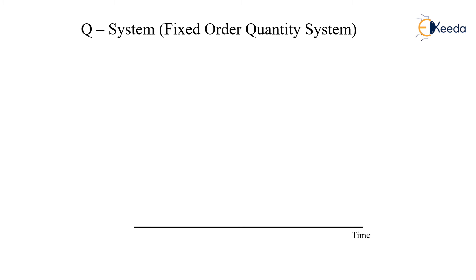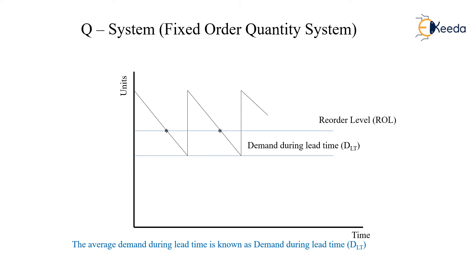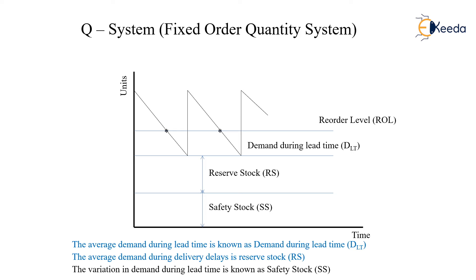What is the Q system? In this, we have the fixed order quantity system. If we plot a graph between the units and the time, we can see the different types of reorder levels and demand. We find that units are based upon the demand during the lead time, and from this we determine the safety stock, reserve stock, and the reorder level.